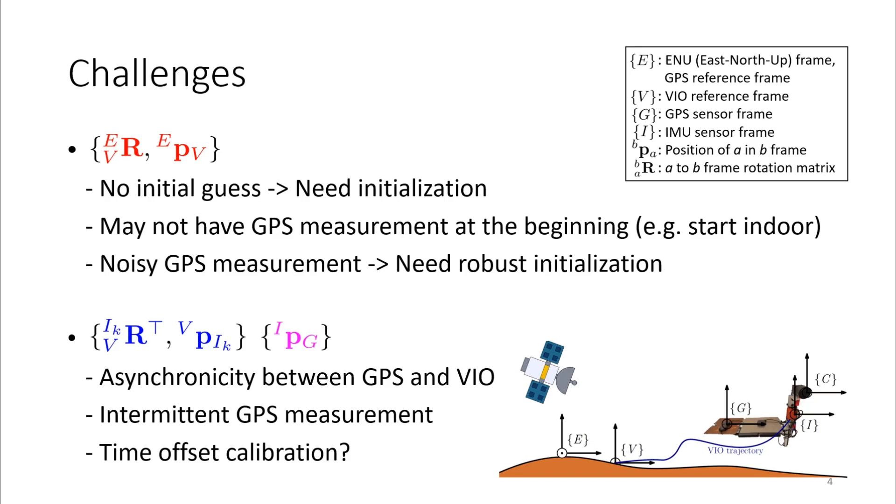Also, not only spatial calibration, but also temporal calibration is important. Especially fast-moving vehicles can be very largely affected by sensor time offset. Therefore, modeling this and performing temporal calibration is very critical.